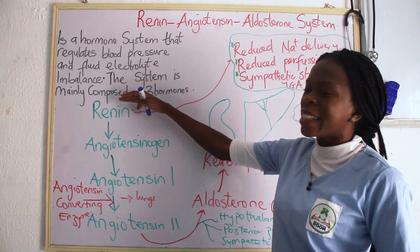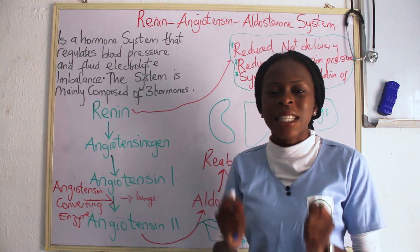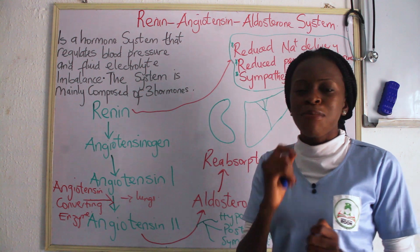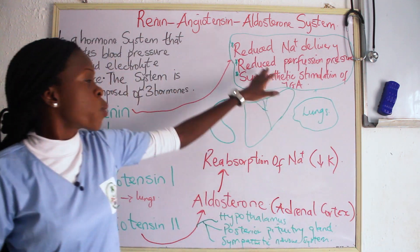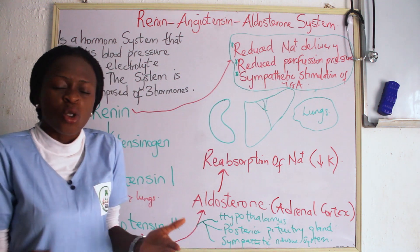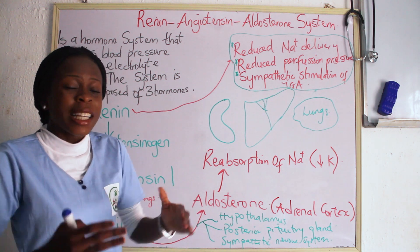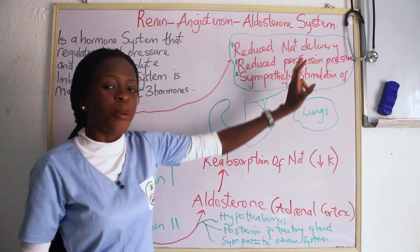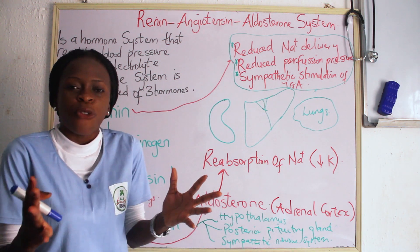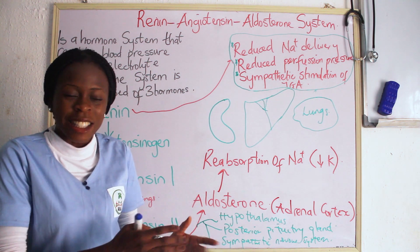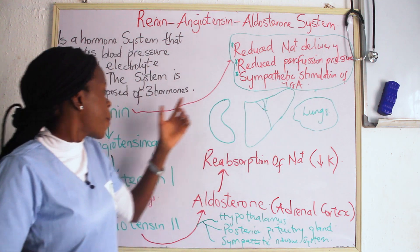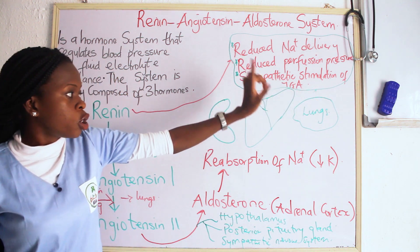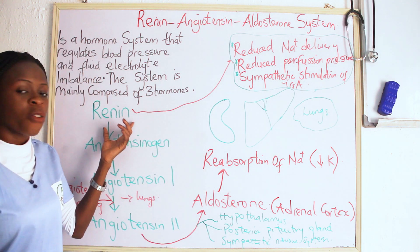The first hormone is Renin, which is secreted from the juxtaglomerular apparatus of the kidney. What makes the kidney secrete Renin? The first trigger is reduced sodium delivery — when there is reduced sodium, the body notices it's not getting enough, and this leads to the release of Renin. Also, reduced perfusion pressure — when the kidney is not getting enough blood or fluid — will also cause the kidney to release Renin. And sympathetic stimulation of the juxtaglomerular apparatus also leads to the release of Renin.